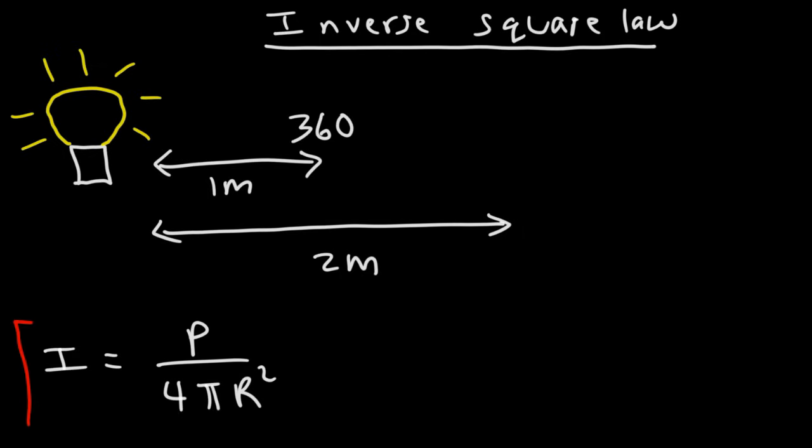Looking at this equation, we could see the relationship between intensity and distance. In this case, distance is r. The intensity is inversely related to the square of the distance.